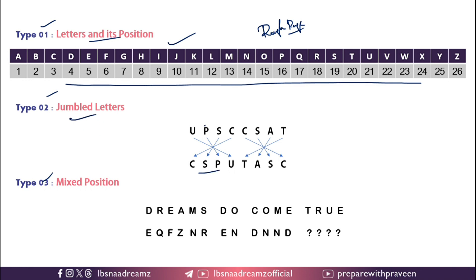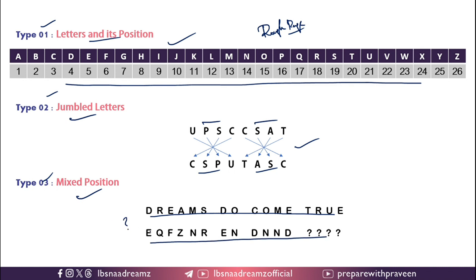In Type 2, jumbled letters — see how the letters are jumbled. Similarly questions will be asked. In Type 3, mixed set position. For the sentence 'Dreams do come true', you have written a certain code — can you decrypt this? After D, E will come; Q is the previous letter of R; after E, F will come; after Z, A will come — it will be like in a loop. These are the types in which they have asked questions so far. Now let us solve the previous year questions.